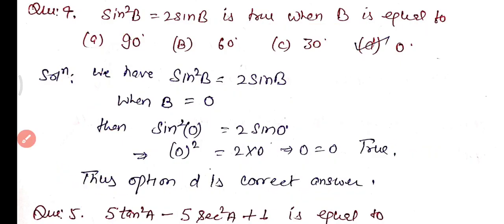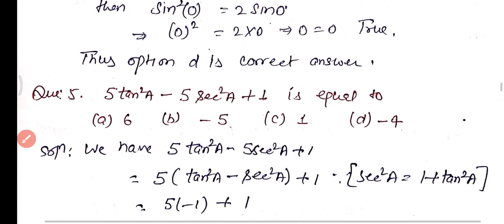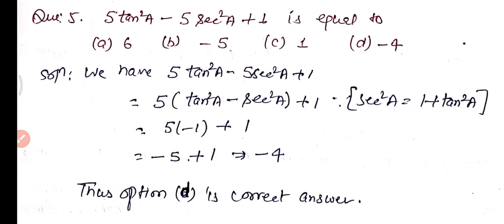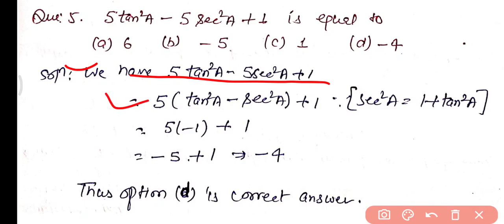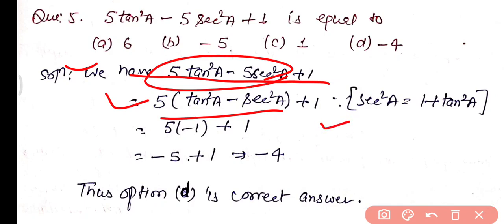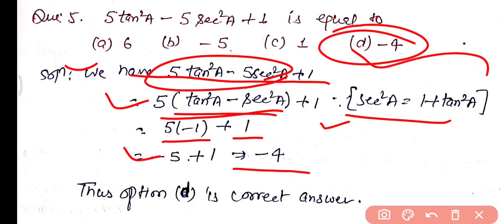Question 5: 5tan²a − 5sec²a + 1 equals — options: 6, −5, 1, or −4. Taking 5 common from the first two terms: 5(tan²a − sec²a) + 1. Using the identity tan²a − sec²a = −1, this becomes 5(−1) + 1 = −5 + 1 = −4. Option D is the correct answer.